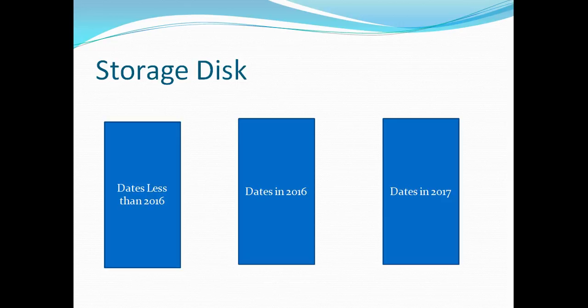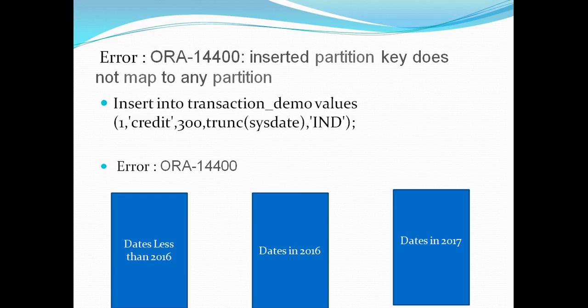Now I have a challenge. Right now it's January 2018, and if I try to insert a row where the transaction date is in 2018, Oracle will not know which partition it should go into. Oracle will throw an error that the inserted partition key does not map to any partition. As you can see in the transaction demo table, I'm trying to insert today's date in January 2018 and it gave me an error.